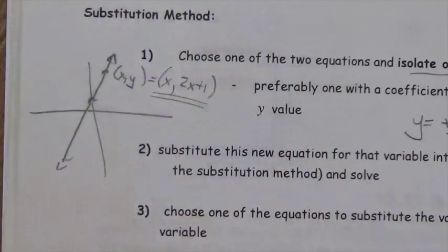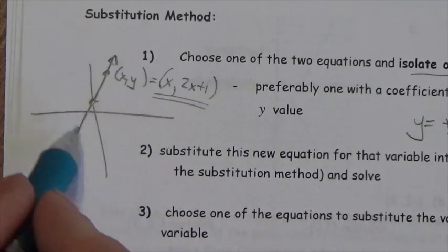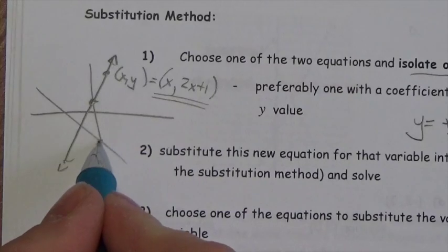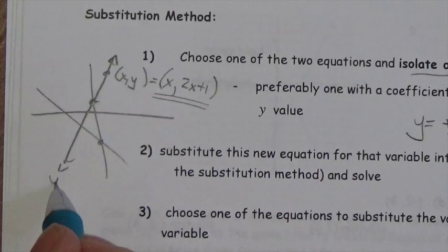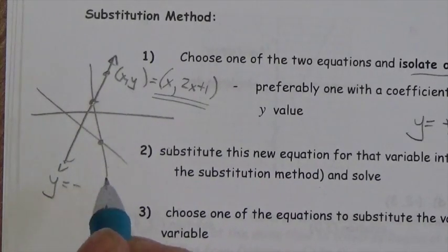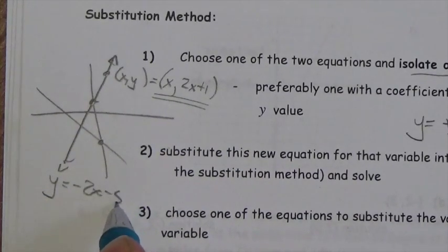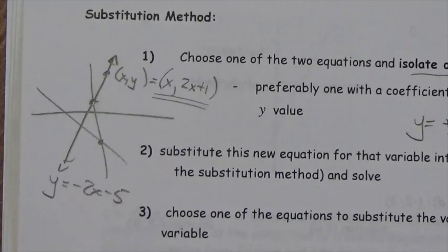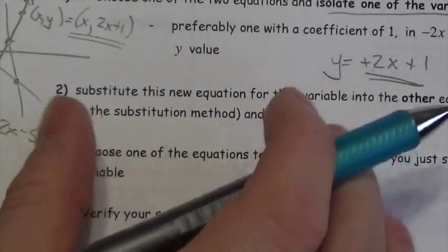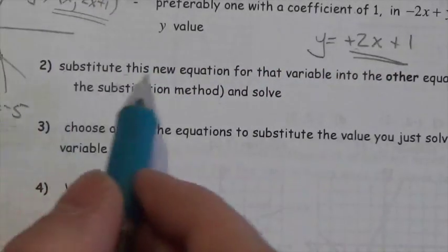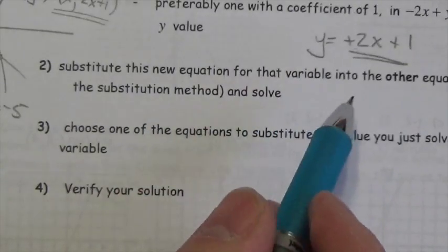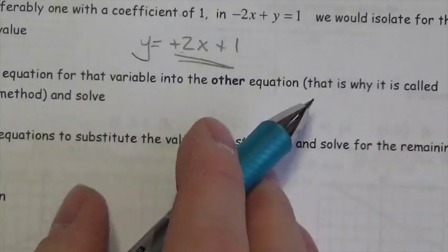Now let's say that you've got some other line — let's say it's y equals negative 2x minus 5. Now let's take a quick look at the second step of the method. What I'm going to do is substitute this new equation for that variable into the other equation. Every point on the first line looks like x comma 2x plus 1.